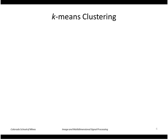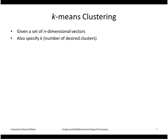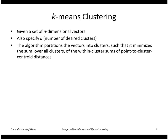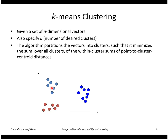Looking at k-means clustering: we are given a set of n-dimensional vectors and we specify k, the number of clusters. The algorithm partitions these vectors into clusters such that it minimizes the sum over all clusters of the within-cluster distances. Here is an example of vectors in two dimensions with the centroids of three clusters. If we have clustered correctly, the distances of these points to their respective centers is minimized. If one point were clustered incorrectly, the overall sum would be much larger.